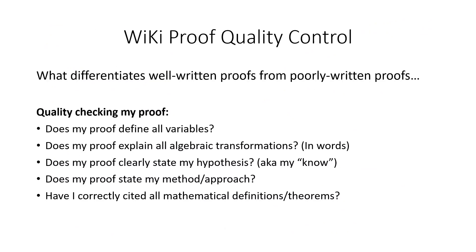And that is the end of my proof. Now I'll briefly go over the wiki proof quality control checklist, which differentiates a well-written proof from a poorly written proof. The wiki outline provides the following questions: Does my proof define all variables? Does my proof explain all algebraic transformations in words? Does my proof clearly state my hypothesis, also known as my 'know'? Does my proof clearly state my method and approach? And have I correctly cited all mathematical definitions and theorems used to expand both my 'know' and my 'show'? These questions help you determine whether you have all the necessary elements of a well-written proof. This completes my video — thank you very much.